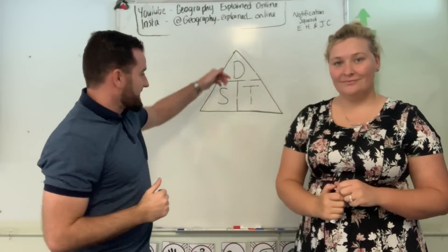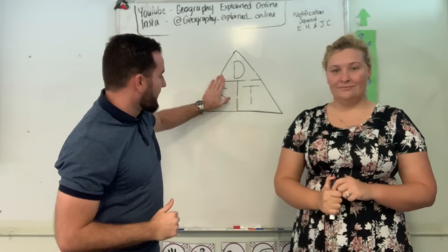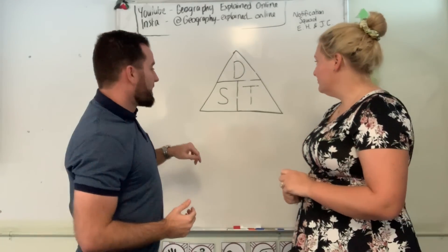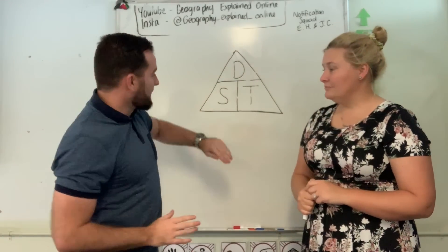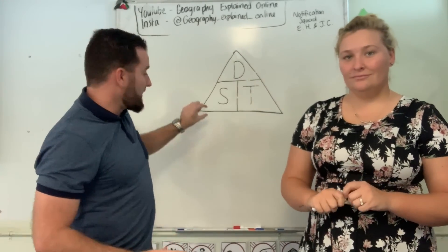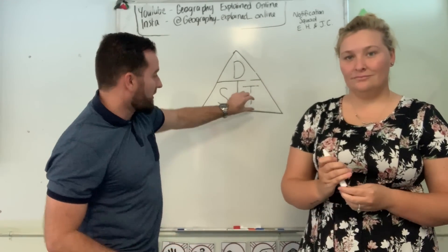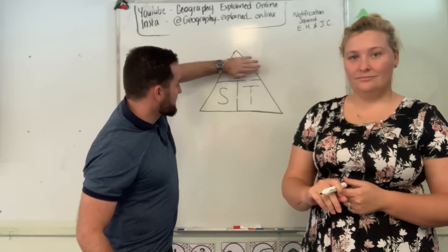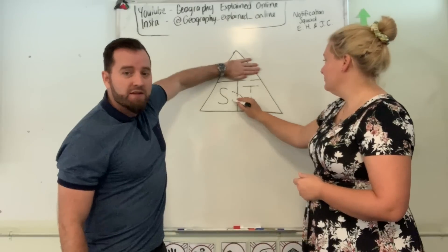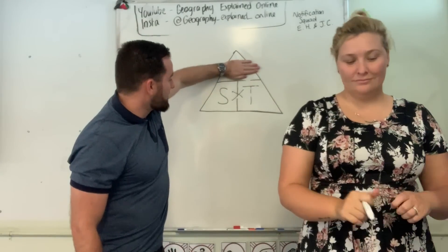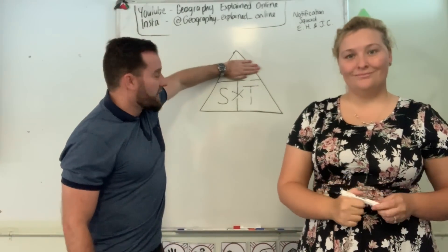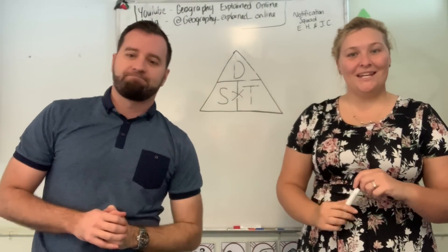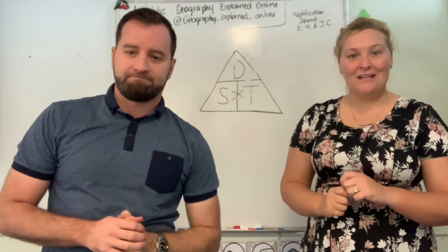It works the exact same way if you need to work out speed — you just go distance over time, easy enough. But the beauty of the triangle is if you need to work out distance and you're given speed and time, rather than one over the other, it becomes a multiplication question. So if you want to work out distance, it's simply speed times time rather than divided by.